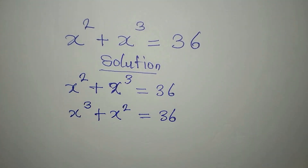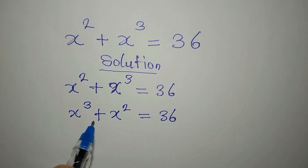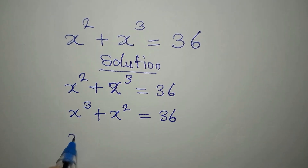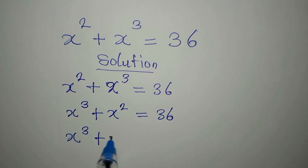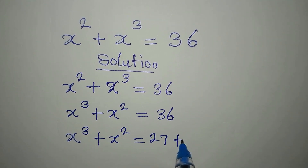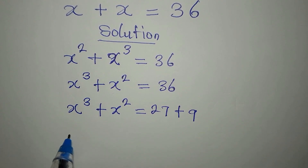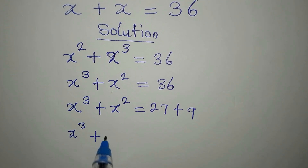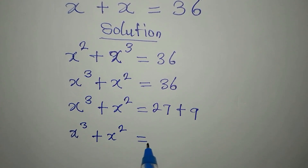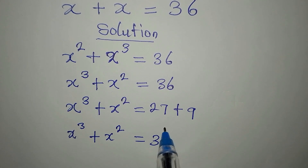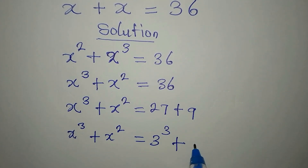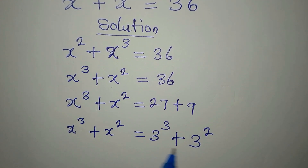From here, what do we do? We can express what we have on the right in a useful form. So we have x to the power of 3 plus x to the power of 2 equals 27 plus 9 — since 27 plus 9 gives us 36. Now x³ + x² equals 27, which is 3 to the power of 3, plus 9, which is 3 to the power of 2.